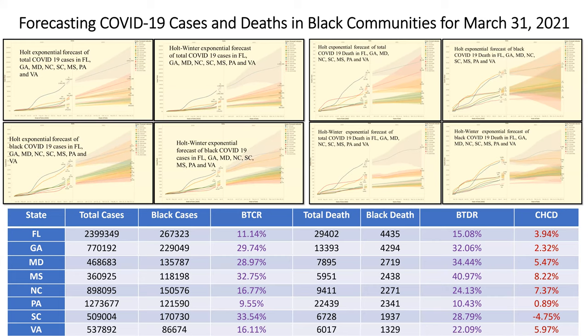We built multiple forecasting models to account for unknowns. Some states exhibited trend only; others had both trend and seasonality. We built models for both scenarios. Whether considering trend or seasonality, the results showed that COVID-19 healthcare disparity will continue. For example, forecasting Florida to March 31, the BTCR for cases is projected at approximately 11.14, and the BTDR remains at 15.08.